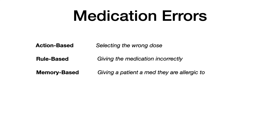Medication errors are also a fairly high yield topic for USMLE and Comlex, and you really just need to know some definitions. There are action-based medication errors, rule-based medication errors, and memory-based medication errors. An action-based error, as the name implies, required an action of an individual — for example, an attending physician selects the wrong dose or wrong medication. In a rule-based error, the rule with which you prescribe or administer the medication was done incorrectly. Memory-based errors involve not remembering some aspect unique to the patient's care — for example, giving a patient a medication they're allergic to because you don't remember the allergy.